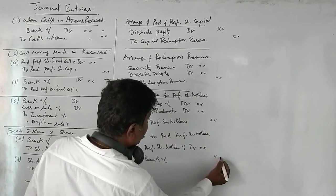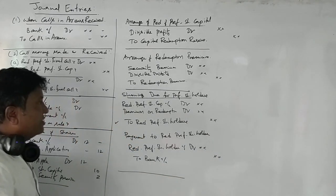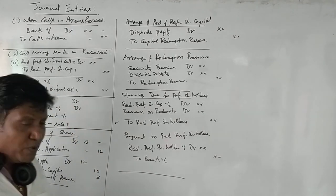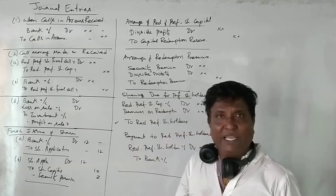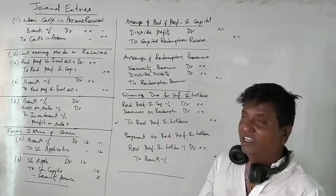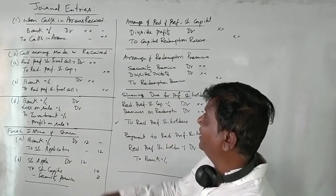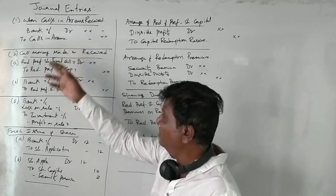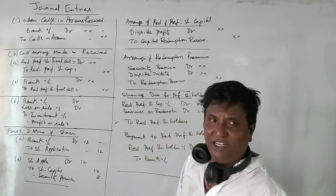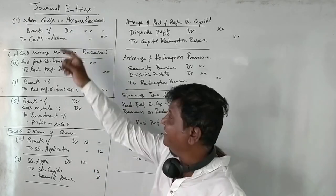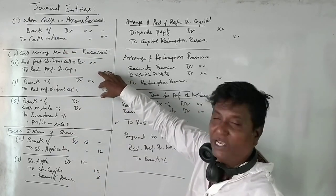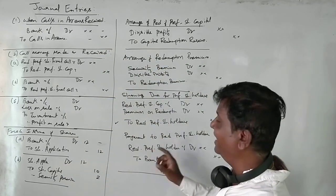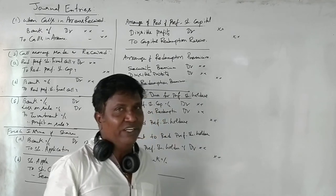This is the final entry which we need to pass. Now, if all scenarios are given in a problem, there will be either call scenarios or call money received scenarios. If you have call scenarios, those two entries apply. In total, there are eight general entries which we need to pass.